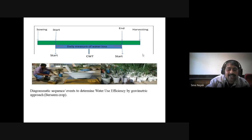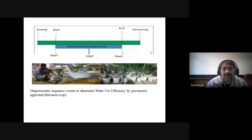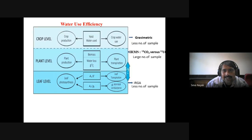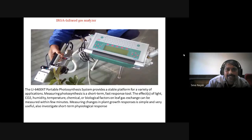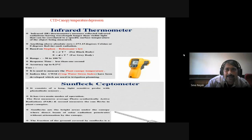For the gravimetric method, estimation is done when we don't have other facility. For bursing crops this is the irrigation instrument used. Photosynthesis and fluorescence rate of photosynthesis instrument. Canopy temperature instrument: if canopy temperature is less then the plant is tolerant.